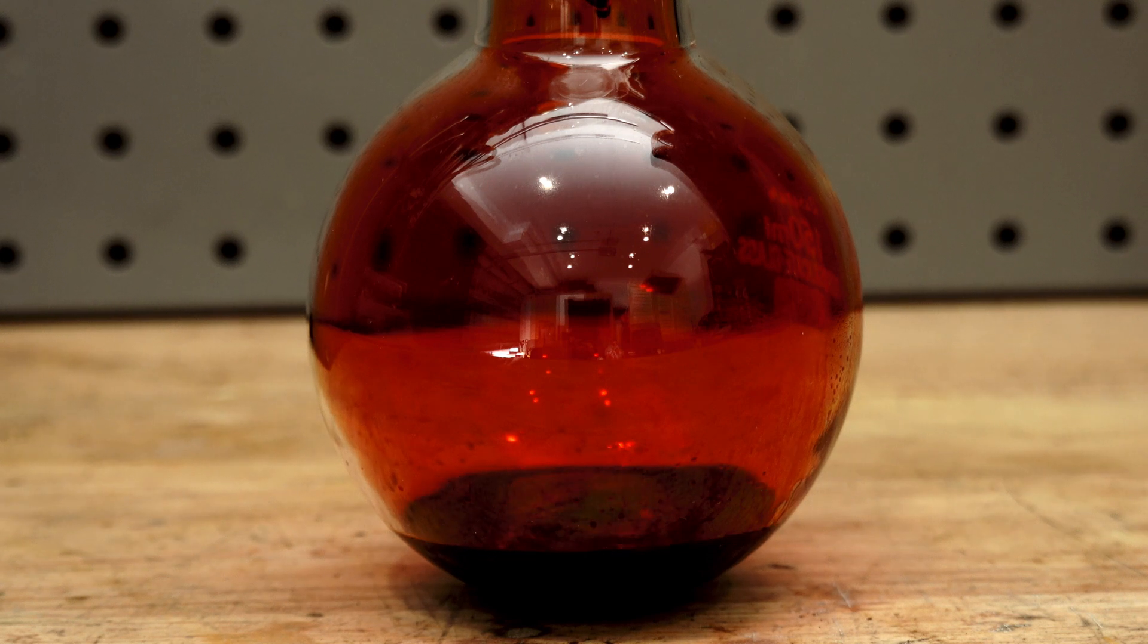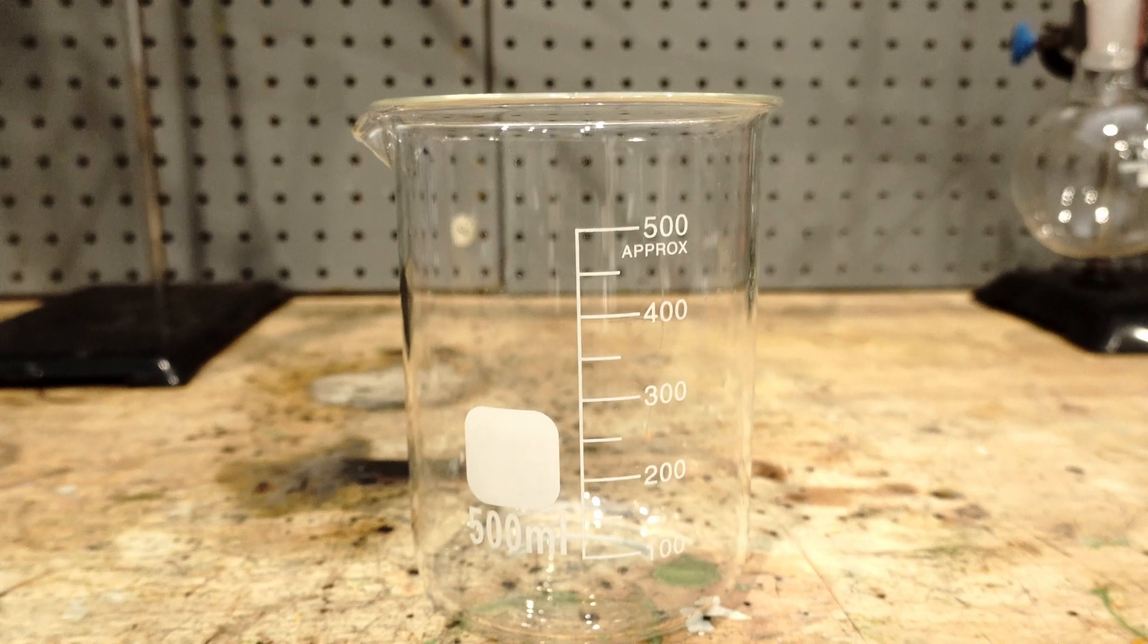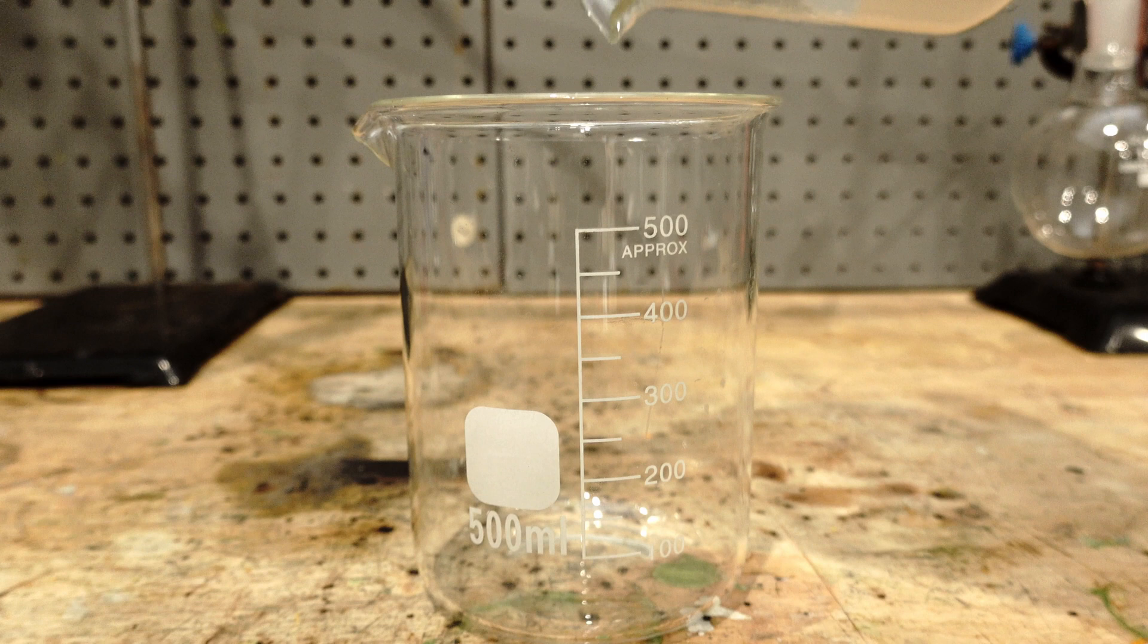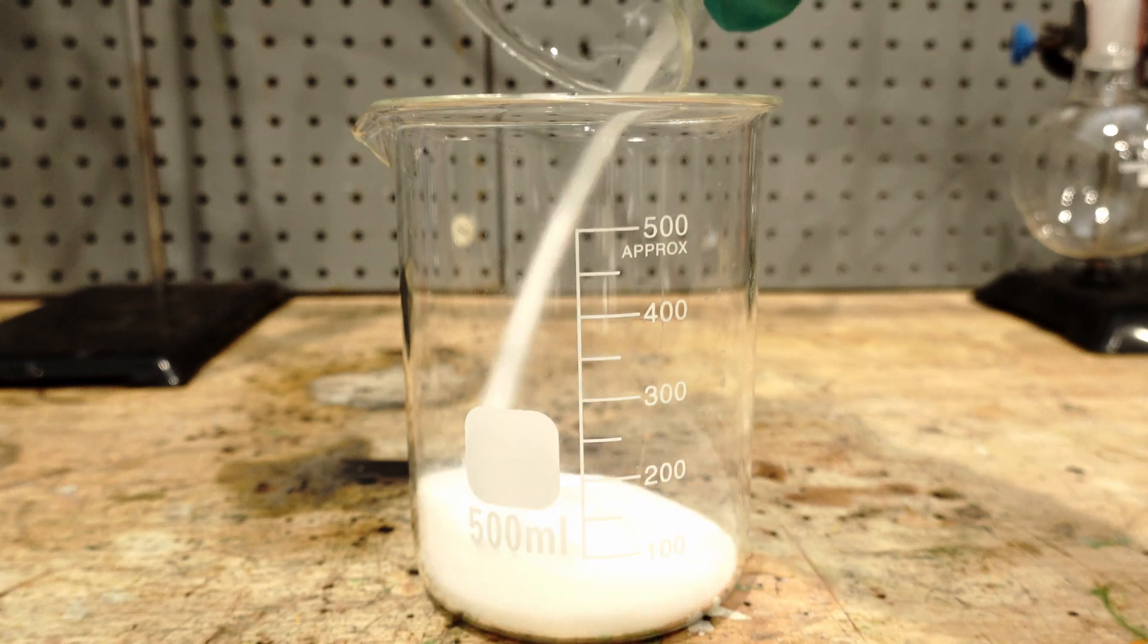Hello, and today I'll be making some Bromine. First I weighed out 153.5 grams of potassium bromide and added this to a 500ml glass beaker.